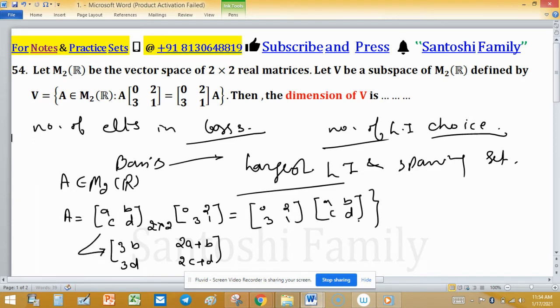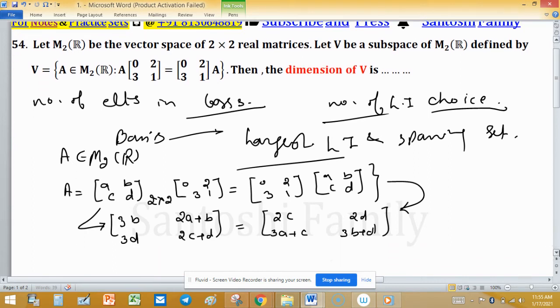And the right-hand side will be [2c, 2d; 3a+c, 3b+d]. This is the matrix from this side.